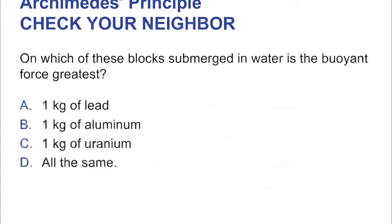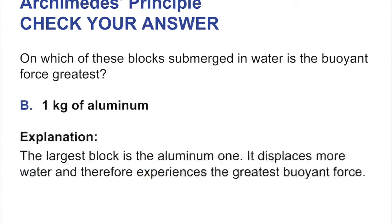On which of these blocks submerged in water is the buoyant force greatest — one kilogram of lead, one kilogram of aluminum, or one kilogram of uranium? The answer is the one kilogram of aluminum, because it has the greatest volume. Aluminum is less dense than uranium or lead, so one kilogram of aluminum must have a greater volume, therefore displacing more fluid. Since they're all submerged in water, aluminum has the greatest buoyant force because the buoyant force equals the displaced water — and they all sink because they're all denser than water.